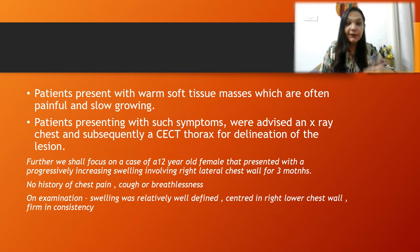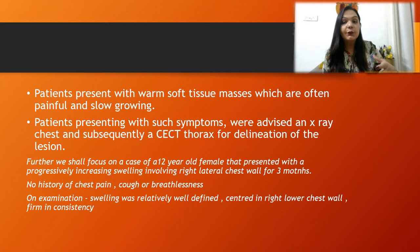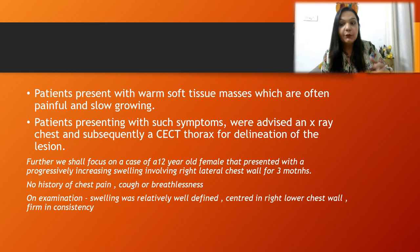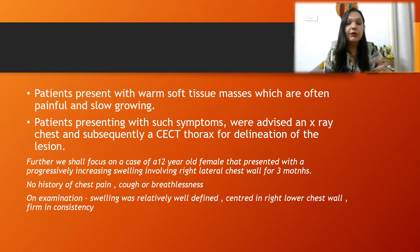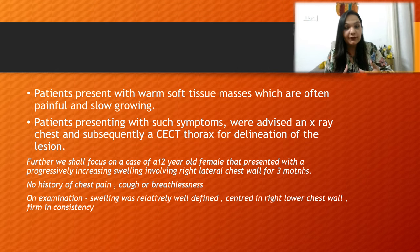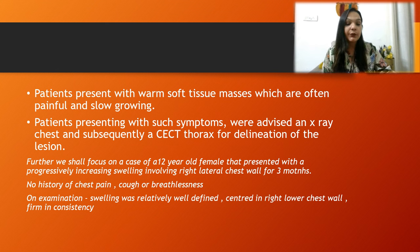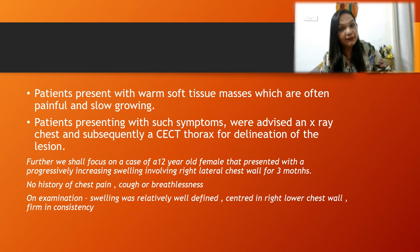When a patient presents to the OPD, they will typically have a warm soft tissue mass which is often painful and slowly growing. Once we have a suspicion of Ewing Sarcoma based on the age and presentation of the patient, we will advise an X-ray chest followed by a CECT thorax.